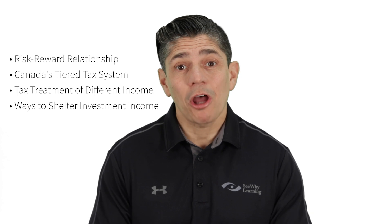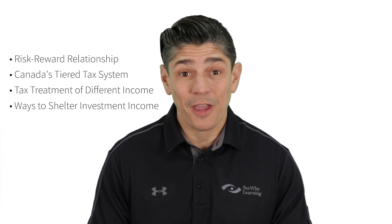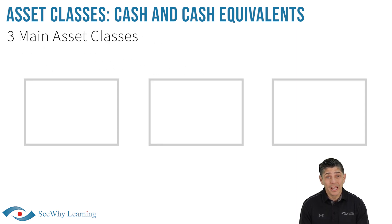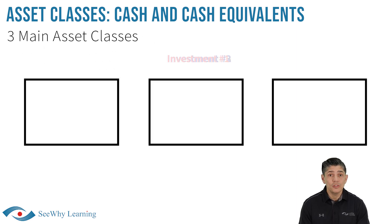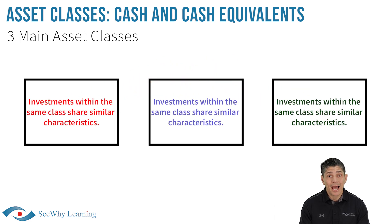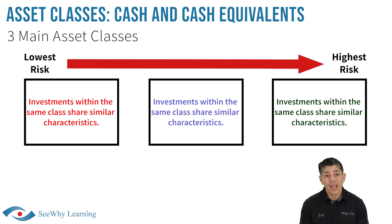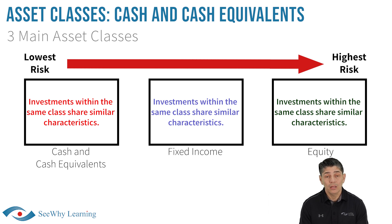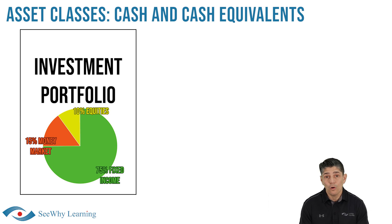Now that the stage has been set, let's talk about the different types of investments available in the marketplace. There are three main asset classes, which in layman's terms just means that most investments fall into one of three broad categories. Investments within the same class share similar characteristics. In order from lowest risk to highest risk, the three main asset classes are cash and equivalents — also called money market instruments — fixed income, and equity. The combination of different investments held in a portfolio is referred to as the investor's asset mix.